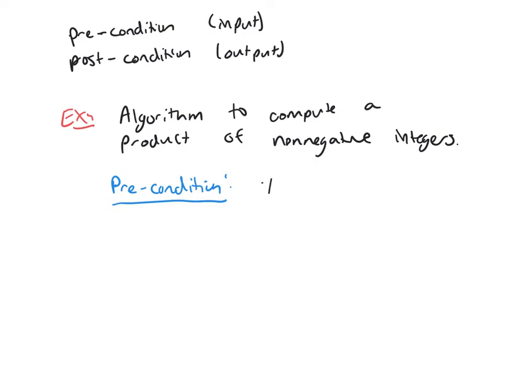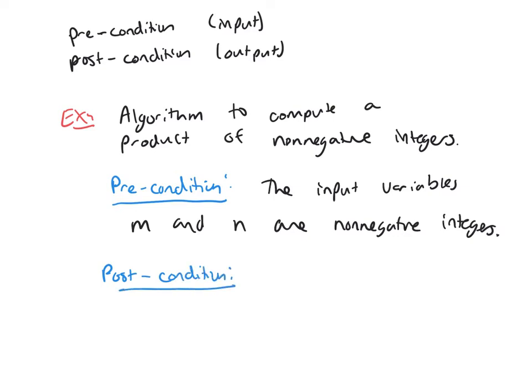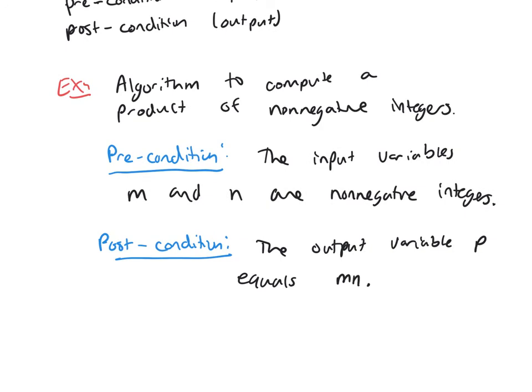I'll go with M and N. The input variables M and N are nonnegative integers. Our post-condition: the output variable, let's call it P, equals the product, which is M times N. So there's our precondition and post-condition. Our input is two nonnegative numbers; our output is the product.